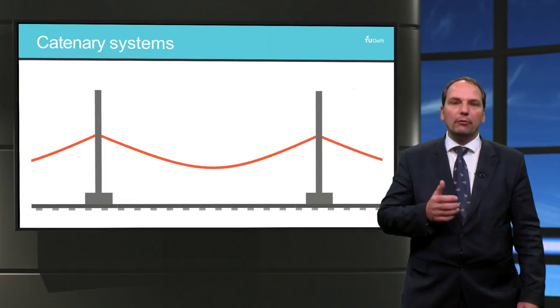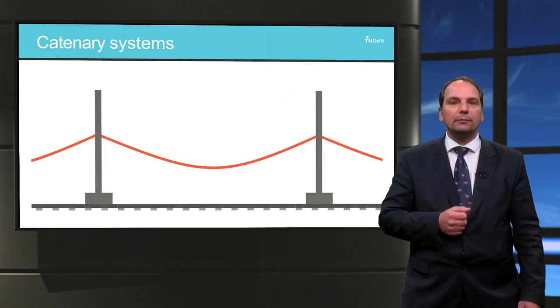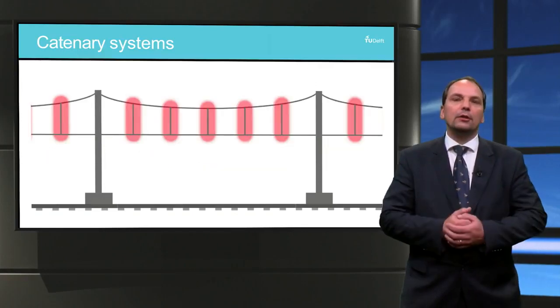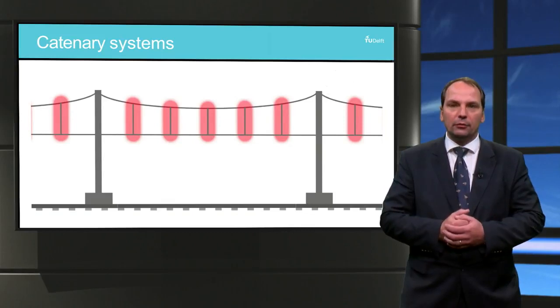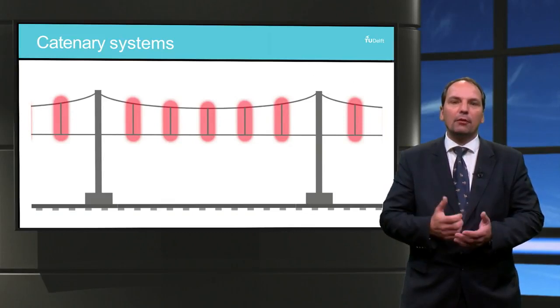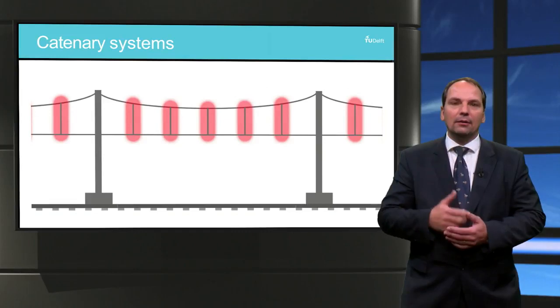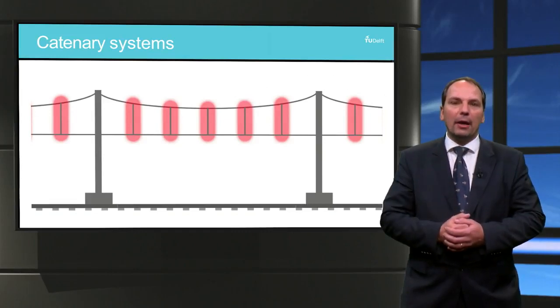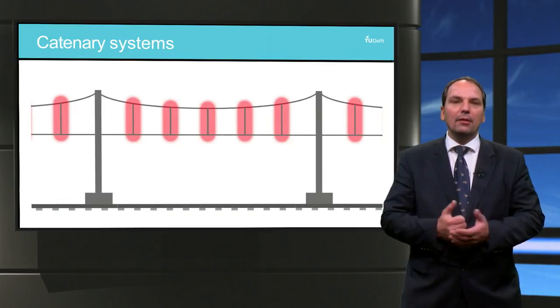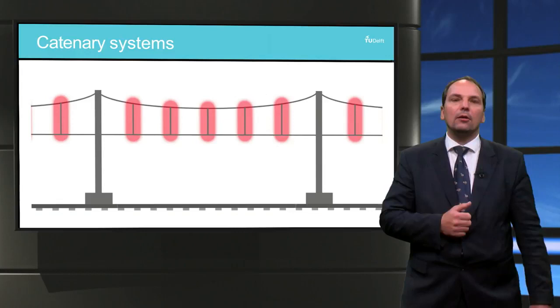It should also be rigid enough to interact dynamically with the pantograph. The solution is to use droppers at specific intervals. These droppers have variable length. The length is calculated based on different parameters, such as the tensioning loads of both the contact and messenger wire and their mechanical characteristics.